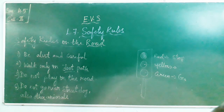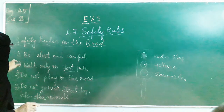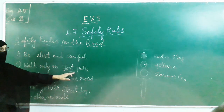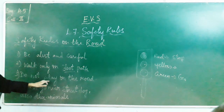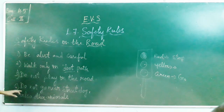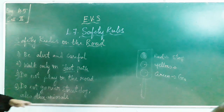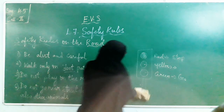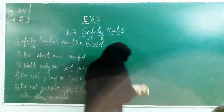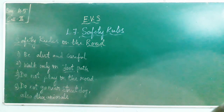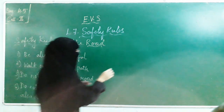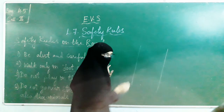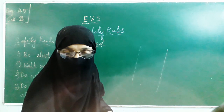You have to follow the traffic rules and signals. Be alert and careful. Walk only on the footpath. Do not play on the road. Do not go near street dogs and other animals as they can harm you. Now, I am talking about pedestrians — the people who are walking on the road, not driving any vehicle. People have to be careful.